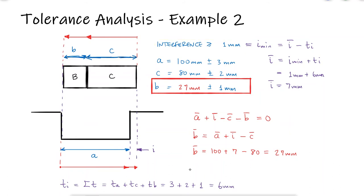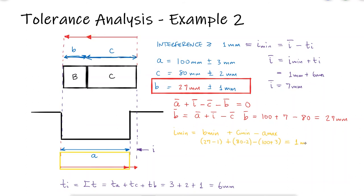Let's both confirm that the answer we got is correct, and let's check for the maximum interference in this situation. The minimum interference will happen when B and C are small, and the hole is large. This confirms that our answer is correct.